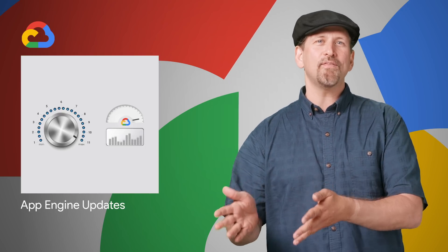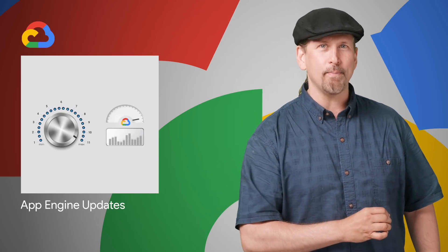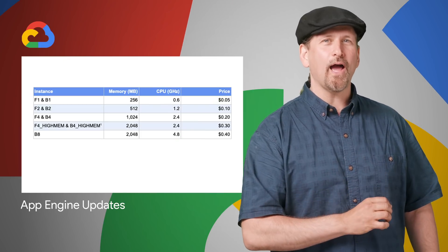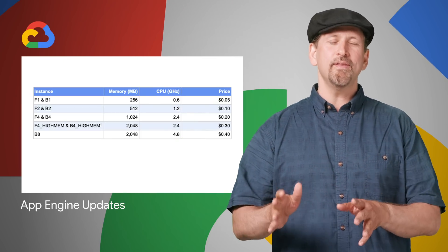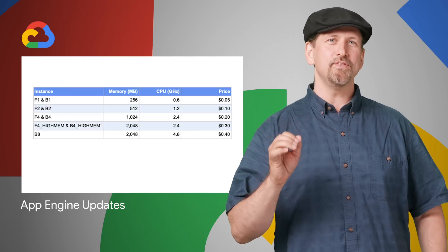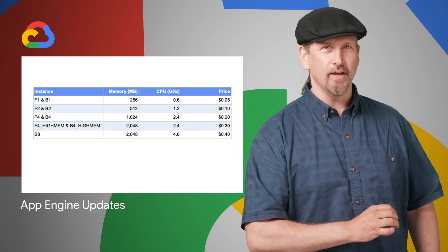Go 1.12 and PHP 7.3 runtimes for App Engine Standard are now generally available, and the Java 11 second generation runtime for App Engine Standard is now in beta. Also, all App Engine second generation runtime instances will receive double the memory.